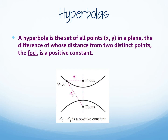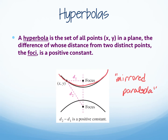A hyperbola is a set of all points in a plane, the difference of whose distances from two distinct points — the foci — is a positive constant. A hyperbola is like a mirrored parabola. There's always going to be a mirror image; it's either going to be up and down or sideways, left and right, and we'll talk about that in a second.